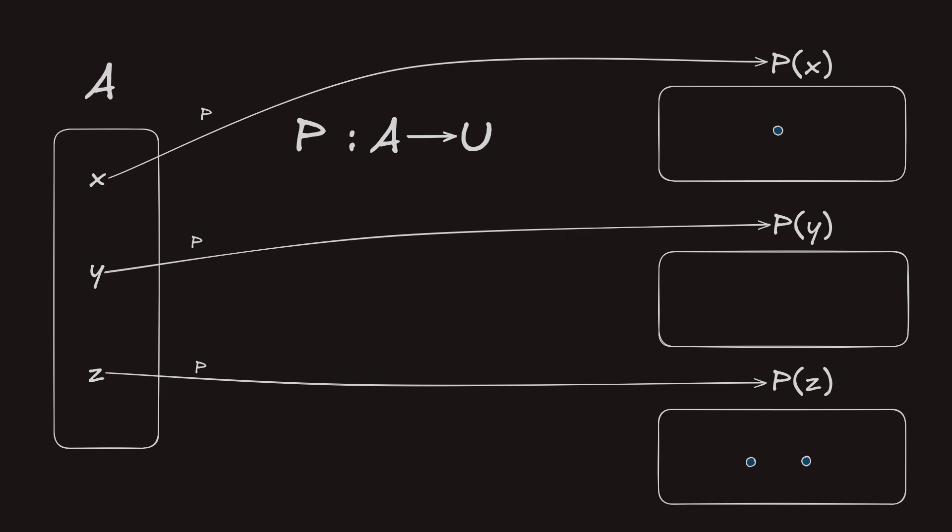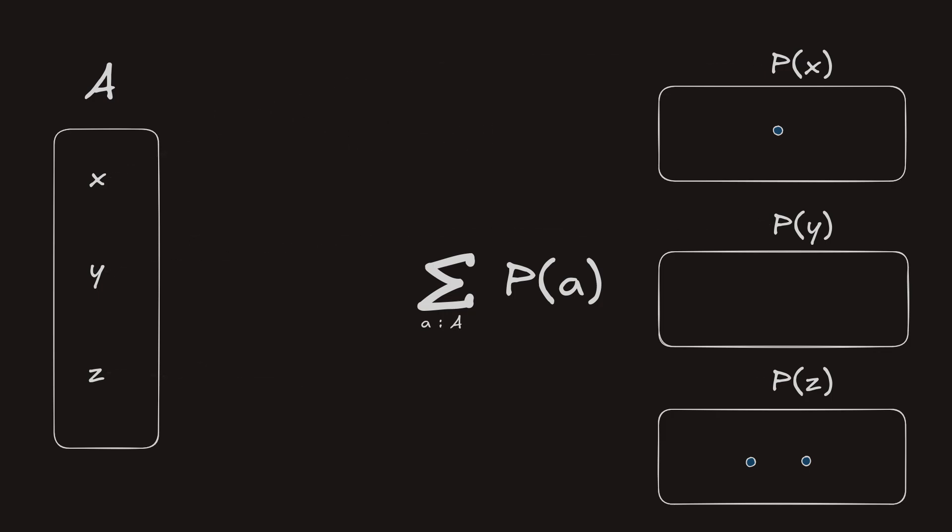Let's use this type family to construct a sigma type. The first term in a pair inhabiting the sigma type would be a term in A. Let's pick the term Z. The second term in the pair would be a term in P(Z). Let's call it V.